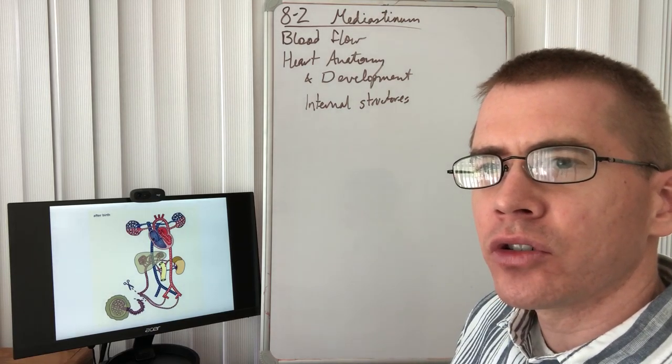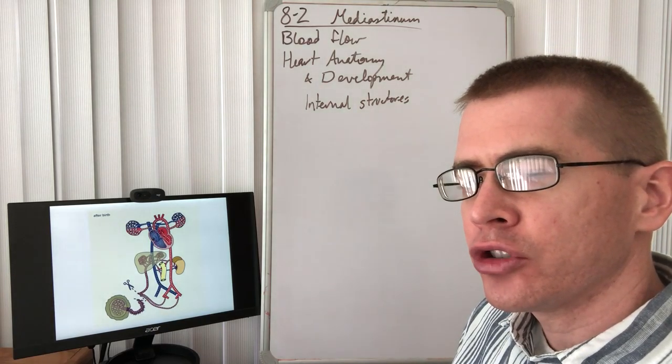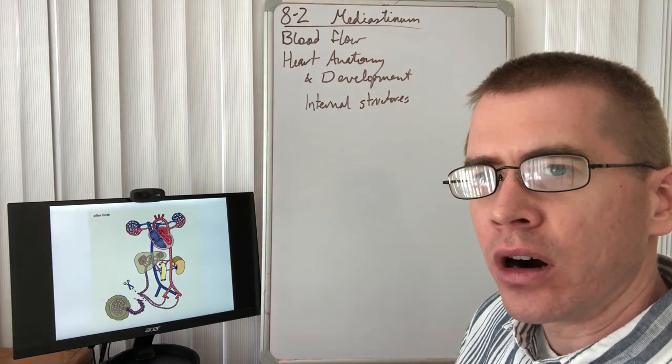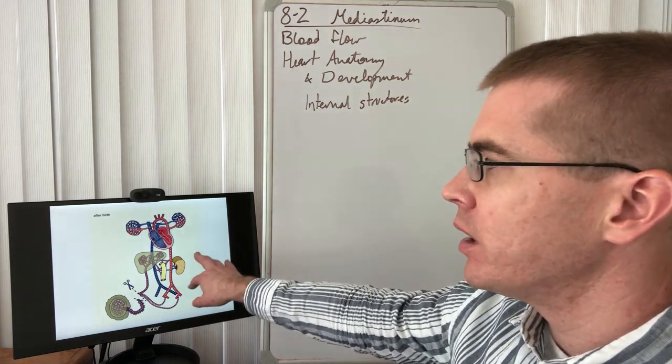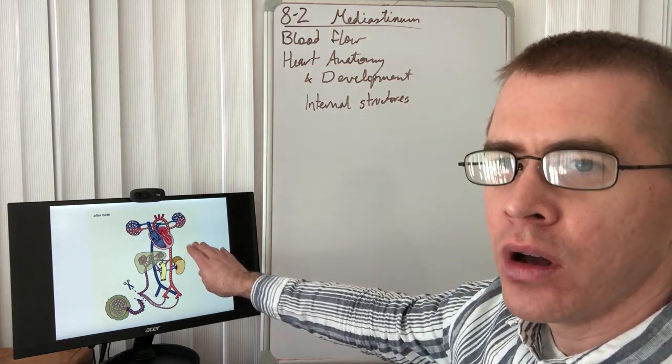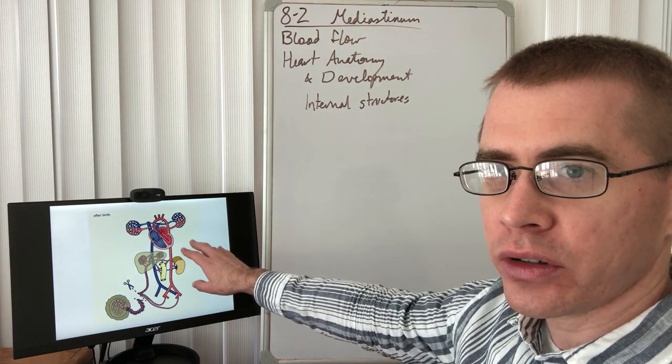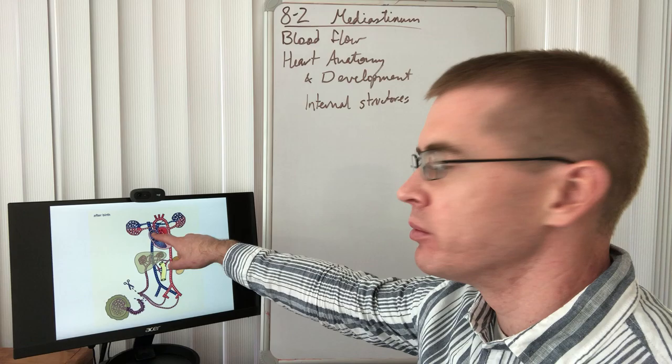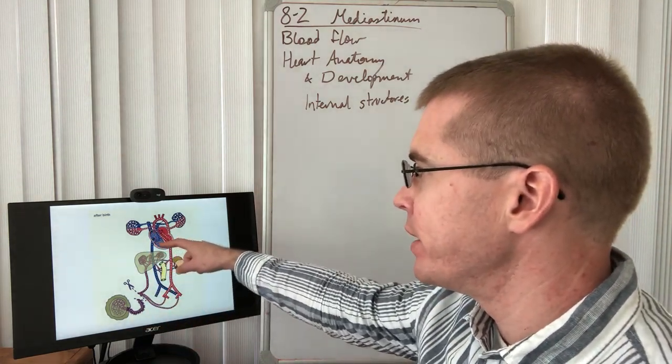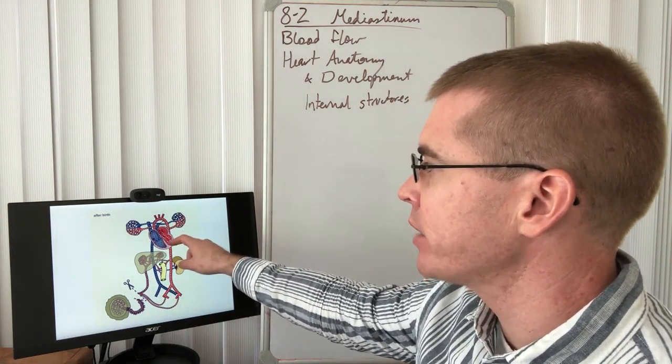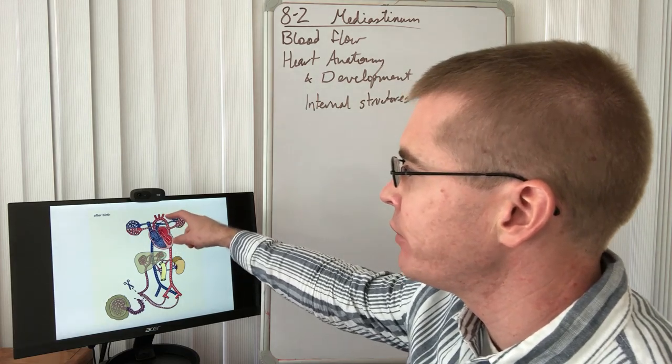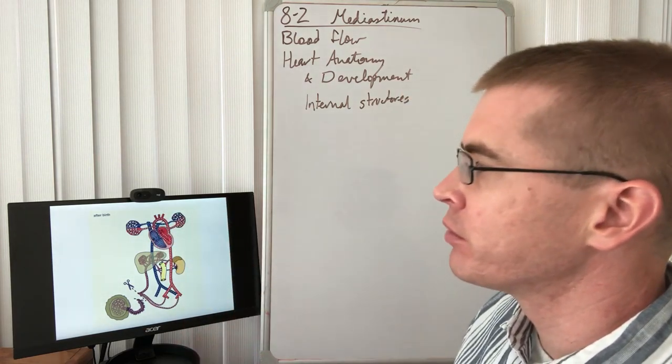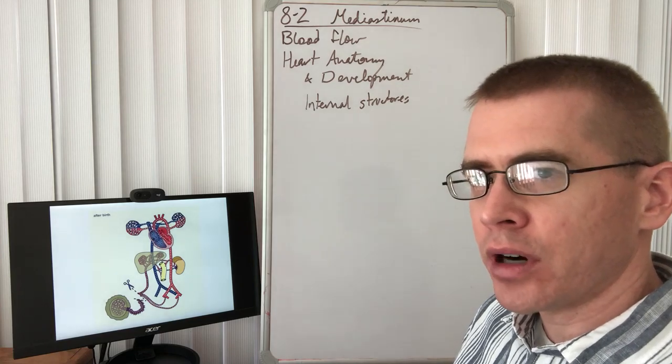Okay, welcome back. Let's talk a little bit about the internal structures of the heart and the development of the heart. So first, we're looking at this animation of the blood flow of the heart in the adult situation after birth. We can see the vena cava supplying the right atrium. We have that typical blood flow to the lungs, back to the left atrium, out the left ventricle, to the arch of the aorta, through the rest of the body.